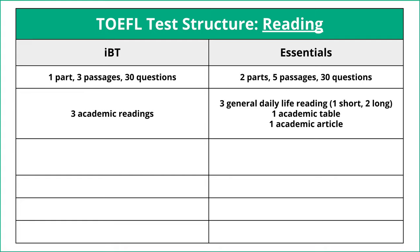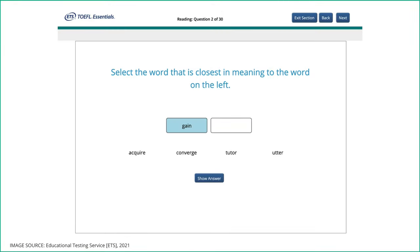In the Essentials test, it's a bit different. There are two parts instead of one, there are five passages in total, but they're the same number of questions — 30 questions. Another difference is the type of reading. It's not all academic reading; it's mostly general reading with one academic table and one article. One question type is vocabulary, which looks very different — there's no passage. You just get a word and you have to match it with a synonym. Either you know what the word means or you don't.